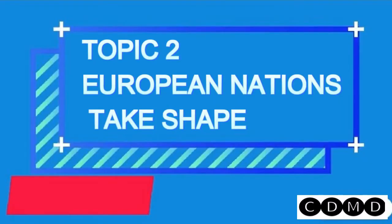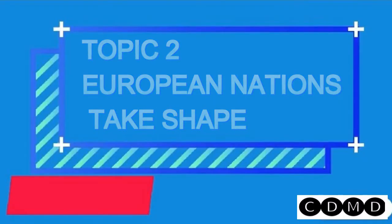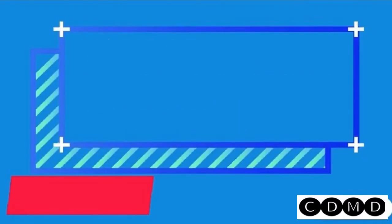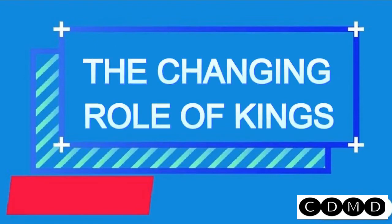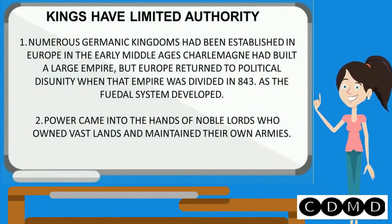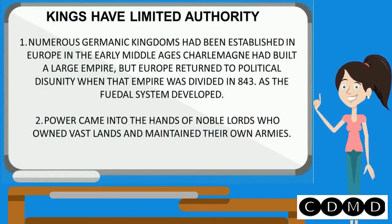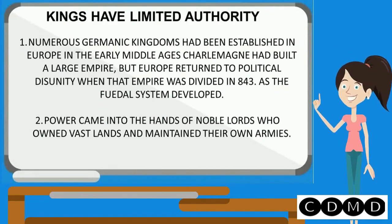Topic 2: European Nations Take Shape. Changing Role of Kings. Numerous Germanic kingdoms had been established in Europe in the early Middle Ages. Charlemagne had built a large empire, but Europe returned to political disunity when that empire was divided in 843, as the feudal system developed.